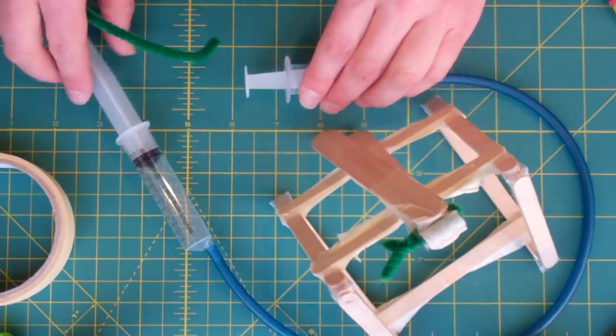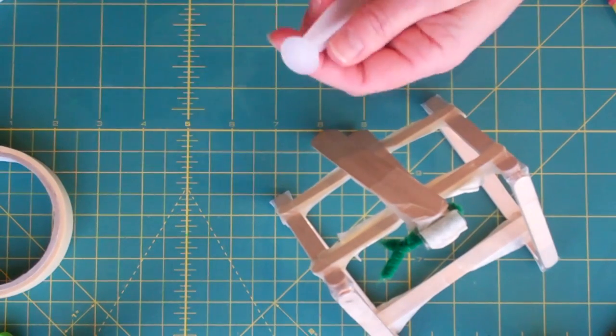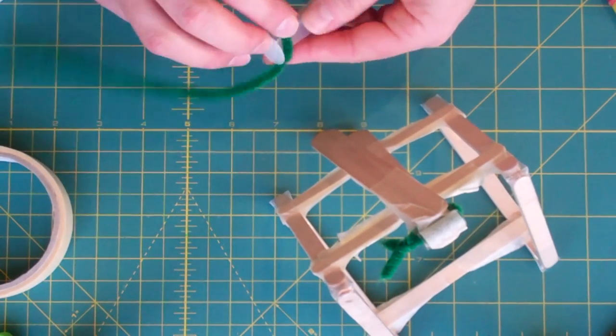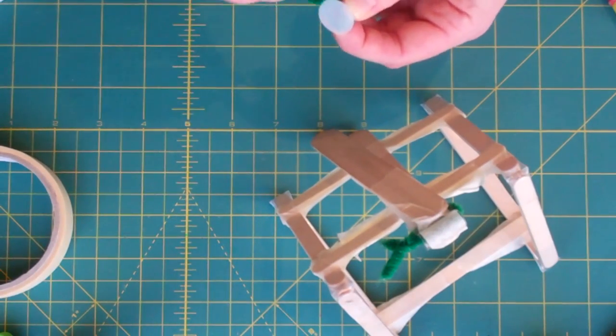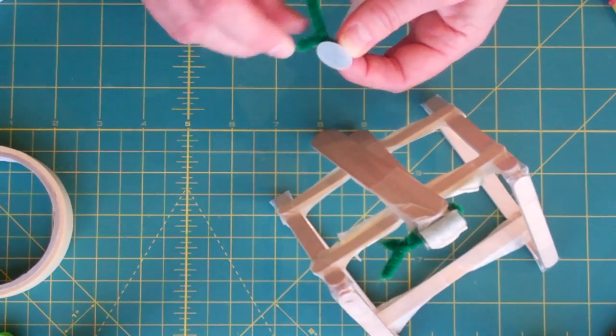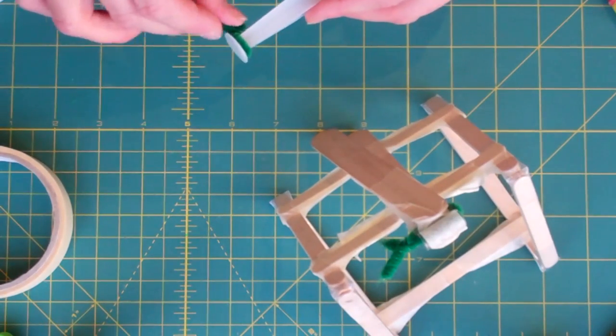First things first, it doesn't particularly matter which syringe goes where, I'll use the open end, that'll be easier. Attach your pipe cleaner nice and securely around the top of the plunger. Get it nice and tight so it's not going to slide down, it shouldn't slide down because it's wider. Yeah, that's really good.